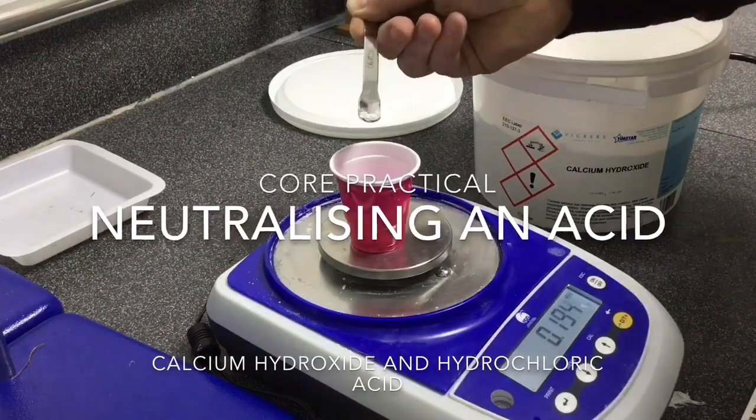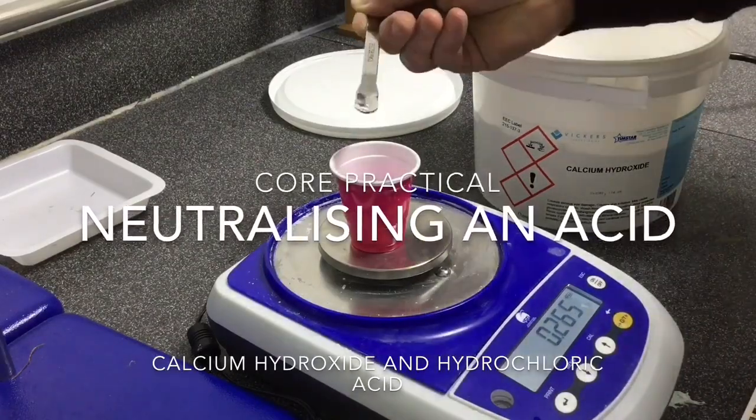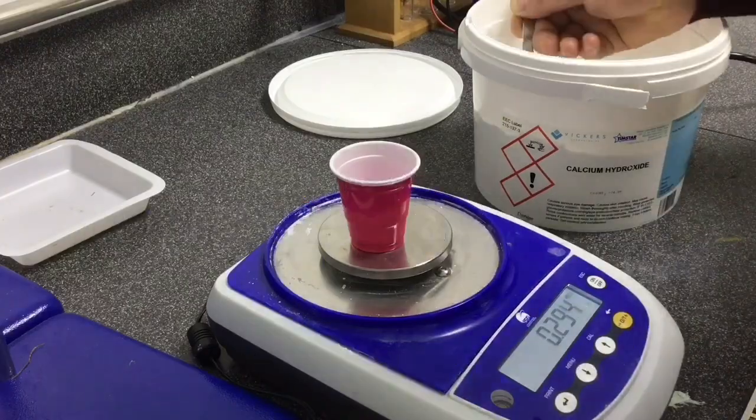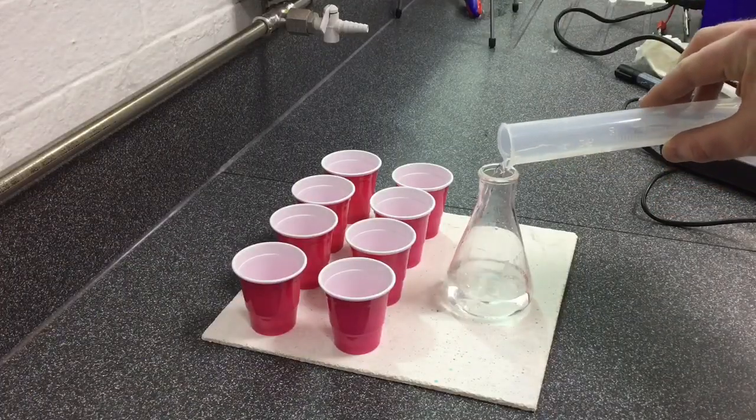In this experiment we will be neutralizing an acid using calcium hydroxide. Our first step is to measure out an exact amount of calcium hydroxide of 0.3 grams.